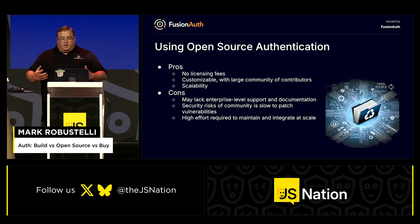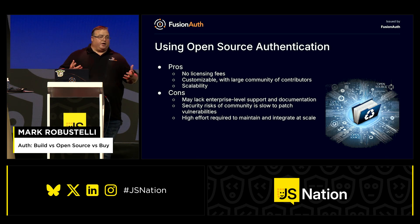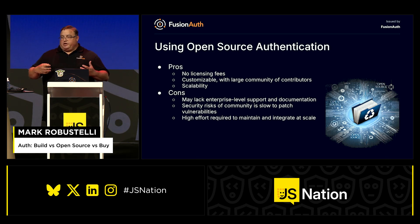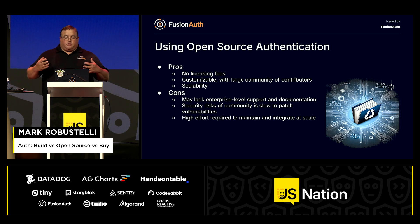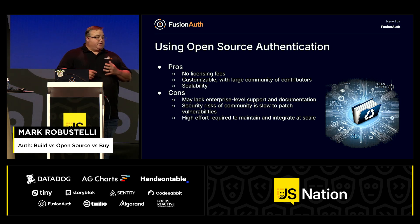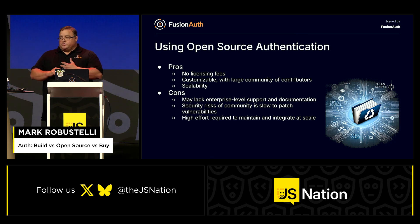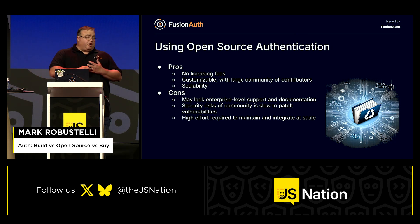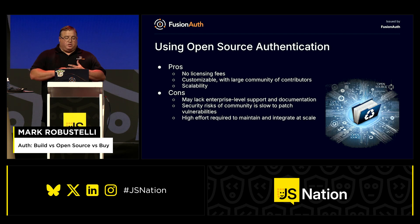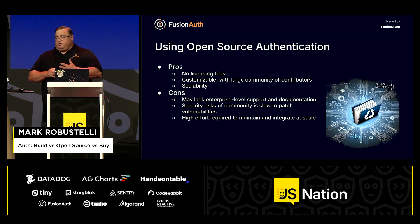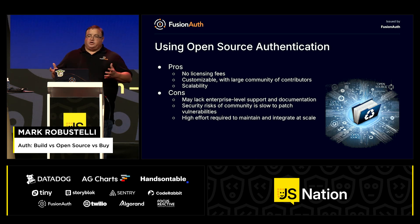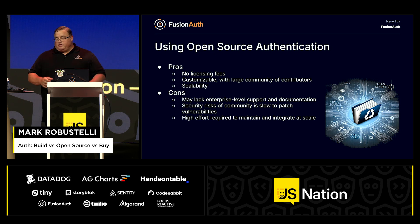Now let's talk about the third option: open source. This is a bit like a community potluck — everyone brings a dish and you all share. You get to try a lot of different food and it's free. The open source community has built powerful, flexible authentication frameworks like OAuth and OpenID Connect, which are widely used and trusted. With open source, you have the flexibility to modify the system however you want. But open source isn't without its challenges. While the initial cost may be low, there's still the need for internal expertise to manage, secure, and maintain it. When something goes wrong, there's not necessarily a dedicated support team. Just like a potluck where someone forgets a main dish — in this case a security update — you're left scrambling to patch things up.